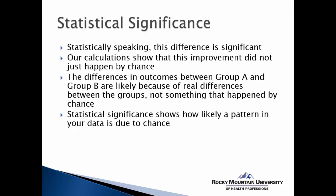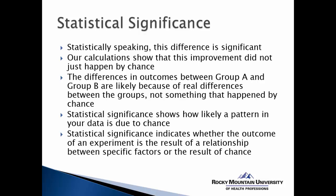Statistical significance shows how likely a pattern in your data is due to chance. And that's where the p-value and the alpha level can be utilized to explain the likelihood that the data is due to chance. And then lastly, statistical significance indicates whether the outcome of an experiment is the result of a relationship between specific factors, in other words cause and effect potentially, or the result of chance.